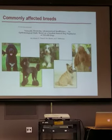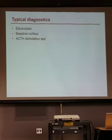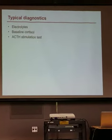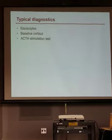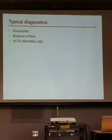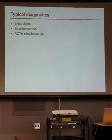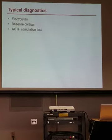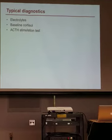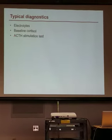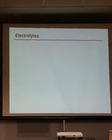How do we go about diagnosing Addison's disease? The three tests we typically use are: number one, we check electrolytes — specifically sodium and potassium. The second test is a baseline cortisol test. And the third test is something called an ACTH stimulation test. ACTH stands for adrenal corticotropin hormone, but we typically just abbreviate it ACTH.